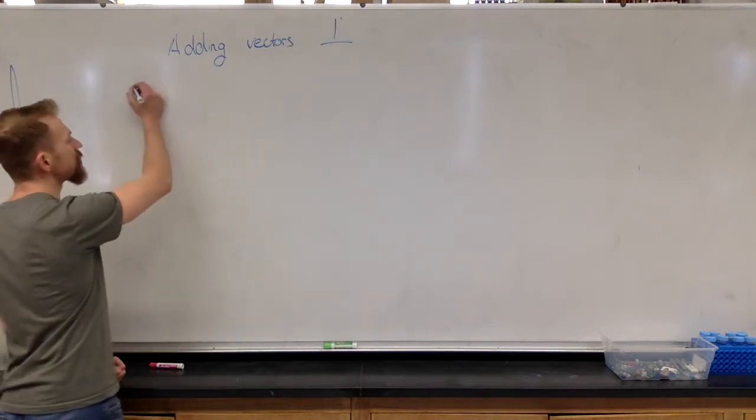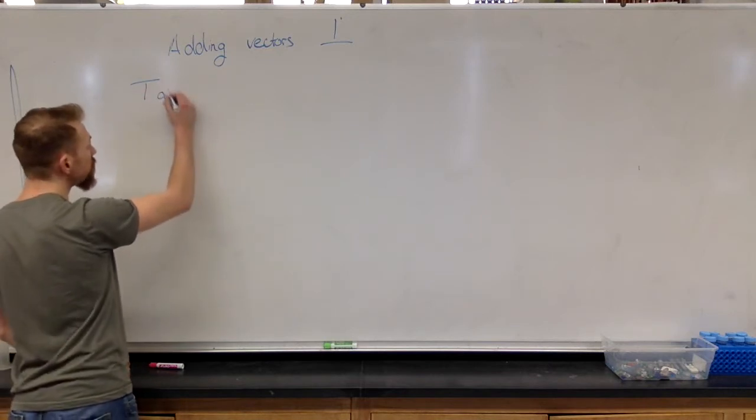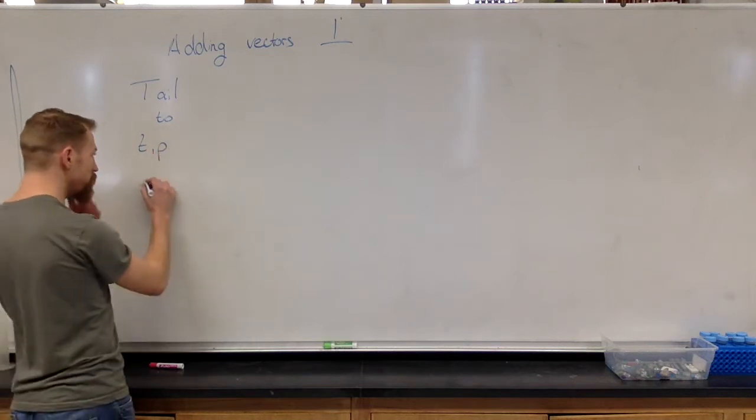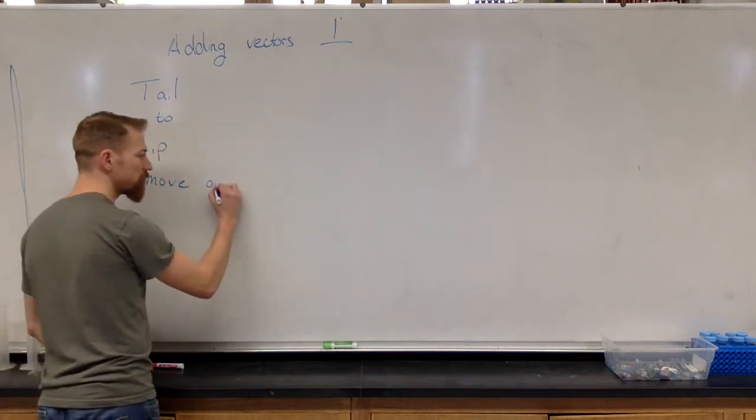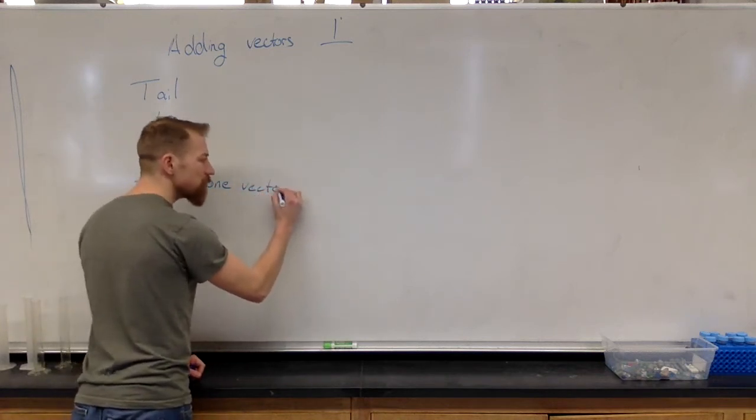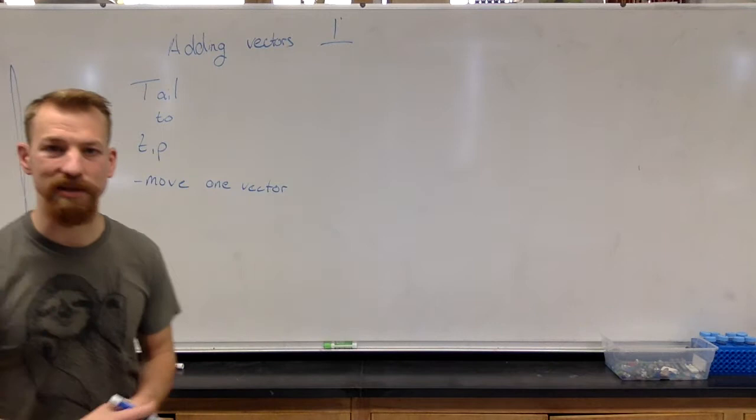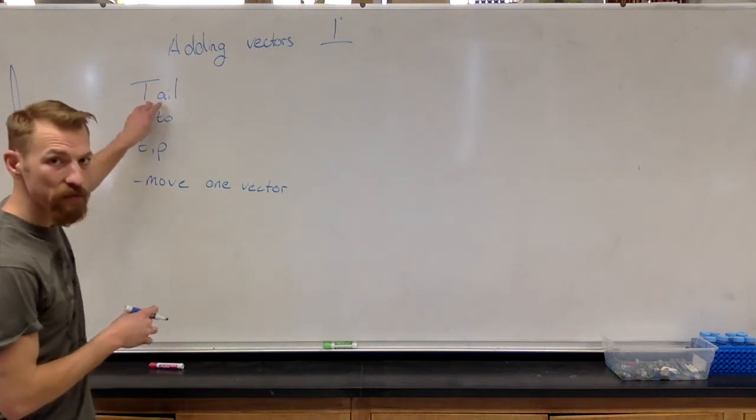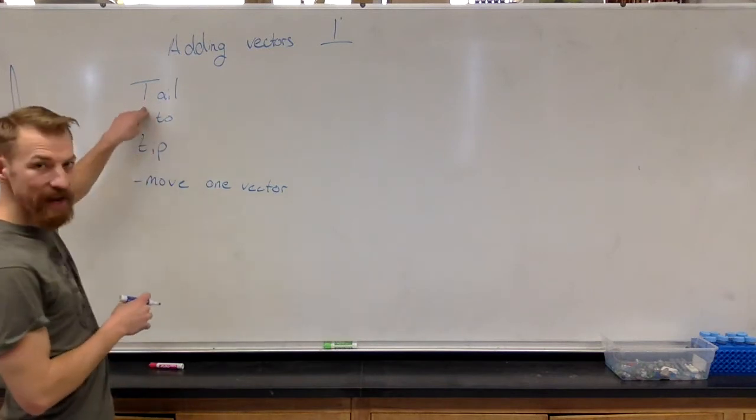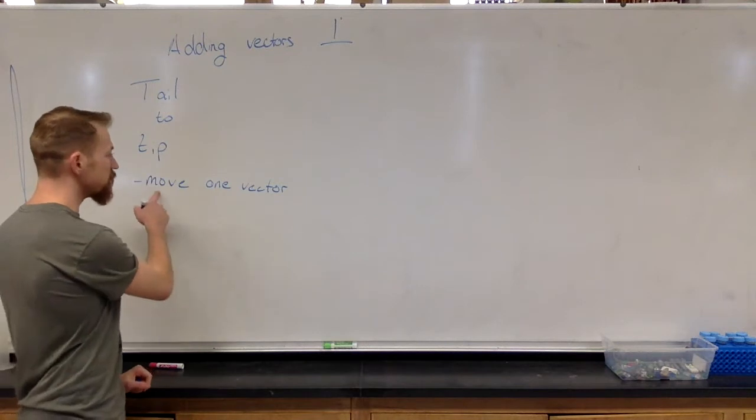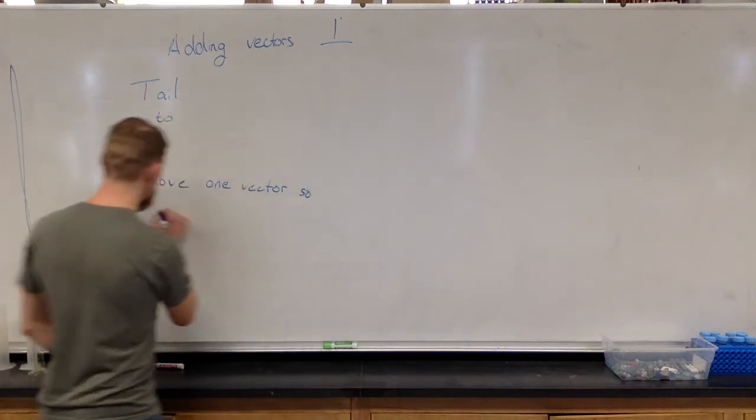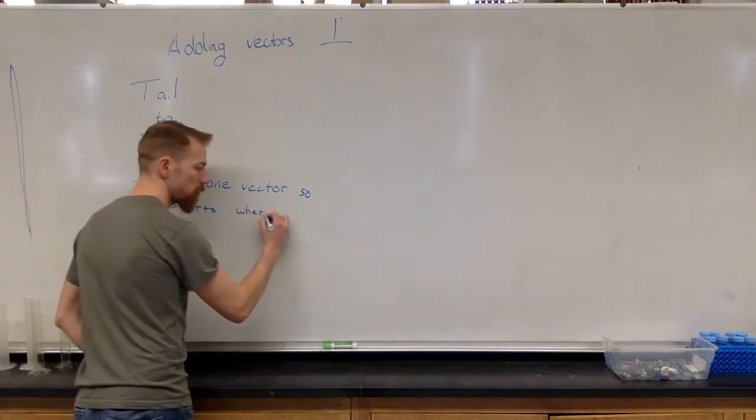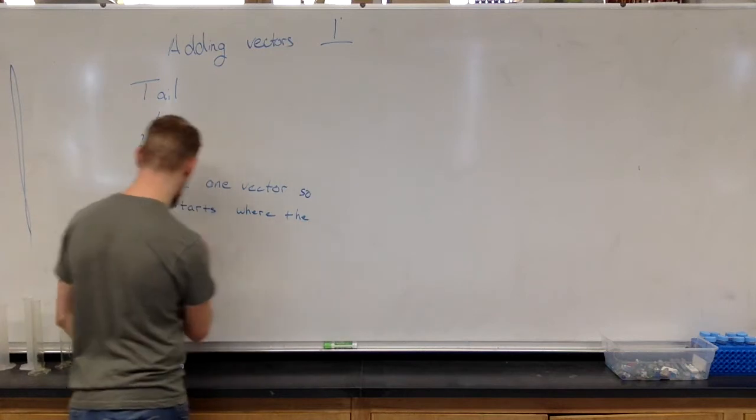The method that I taught you last time is tail to tip and this is where you move one vector and it doesn't matter which one because all the vectors are the same. You move the tail of one vector to the tip of the other. The tail is where it begins and the tip is the arrow. To move one vector so it starts where the other ended.